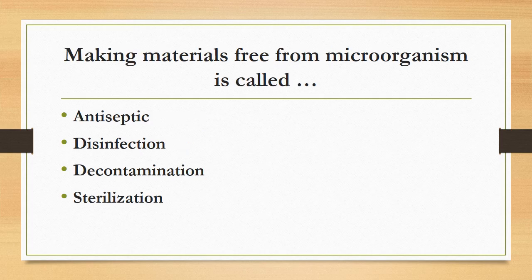Making materials free from all microorganisms is called: antiseptic, disinfection, decontamination, or sterilization? The correct answer is sterilization. Sterilization is the destruction or removal of all microorganisms. Antiseptic is a substance used to kill microorganisms on the surface of skin or mucous membrane. Disinfection is the destruction of pathogenic organisms but not spores. Decontamination is the process of cleansing an object or substance to remove contaminants.